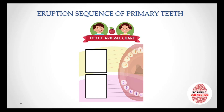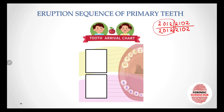First let's talk about the eruption sequence of primary teeth. We all know the dental formula for primary teeth: it is 2102, similarly 2102 for each quadrant. We will be discussing just two quadrants because the eruption sequence is exactly the same for the other quadrants. To remember the eruption sequence of primary teeth, you have to remember: I M C M.